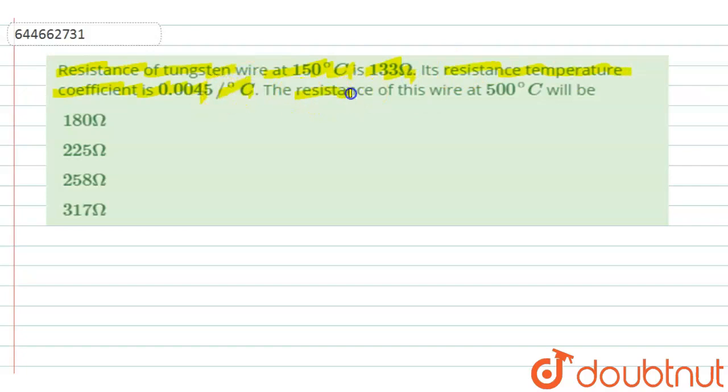Now we have to find the resistance of this wire at 500 degrees Celsius. The given options are 180 ohms, 225 ohms, 258 ohms, and 317 ohms.